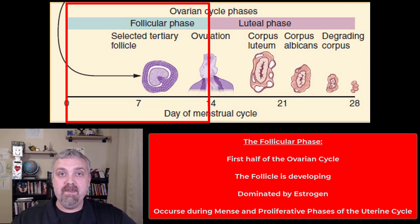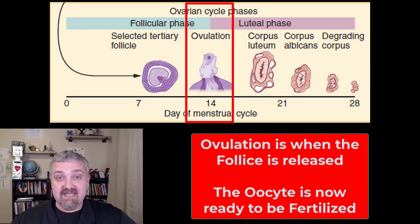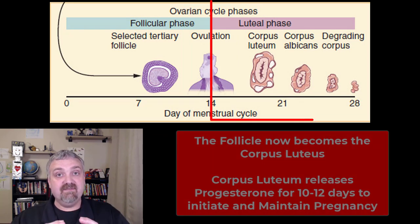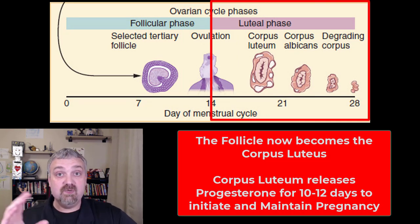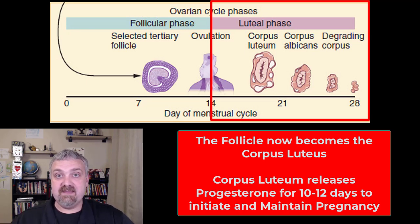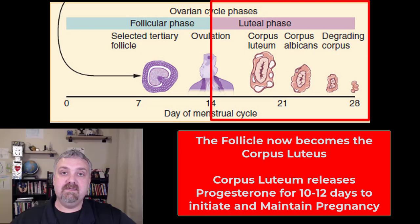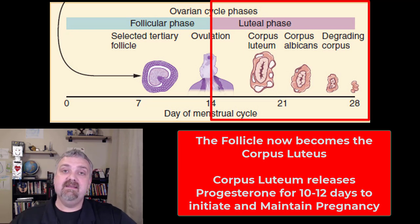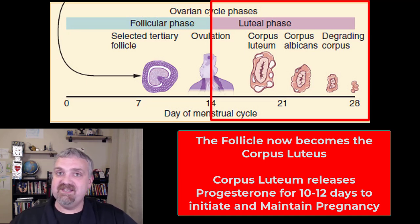We have the selected tertiary follicle, and then during ovulation it is going to rupture out of the ovary and release that oocyte. The leftover from the follicle is going to be the corpus luteum, which will produce progesterone for probably 10 to 12 days to help initiate and maintain pregnancy. If there is not a pregnancy and the hormone levels drop to normal, the corpus luteum will disappear, become the corpus albicans, and degrade — and the cycle will start over the next month. If there is a pregnancy, the sex hormone levels will stay elevated to maintain the pregnancy, and ovulation will shut off.